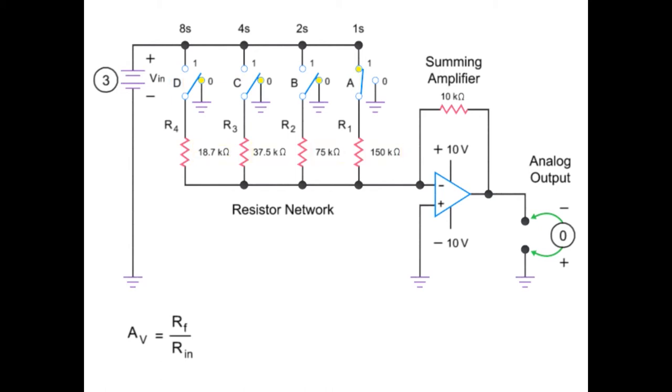Let's look at what happens when switch A is set to logic position 1, or closed. This results in an input resistance to the amplifier of 150 kilohms. Inserting the values into the equation, the gain equals 10 kilohms divided by 150 kilohms, or 0.066.